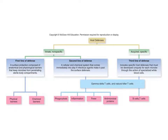To conclude, we have talked about the innate immune response, specifically the portion containing the first line of defense. We looked at the physical barrier — both external and internal — and the chemical barrier.